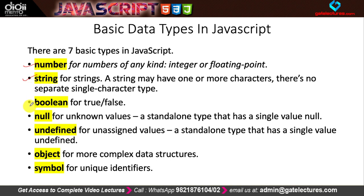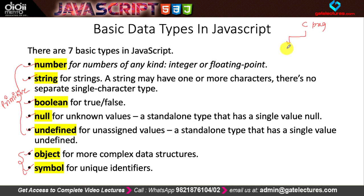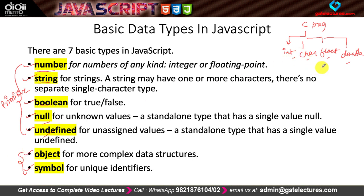There are a total of seven data types in JavaScript: number, string, boolean, null, undefined, object, and symbol. Number, string, boolean, undefined, and null are called primitive data types. Object and symbol are not primitive data types. In C programming, the primitive data types were integer, character, float, and double. In JavaScript, the primitive types are number, string, boolean, null, and undefined. User-defined data types in C used structures or unions — similarly, in JavaScript we have object and symbol as non-primitive types.